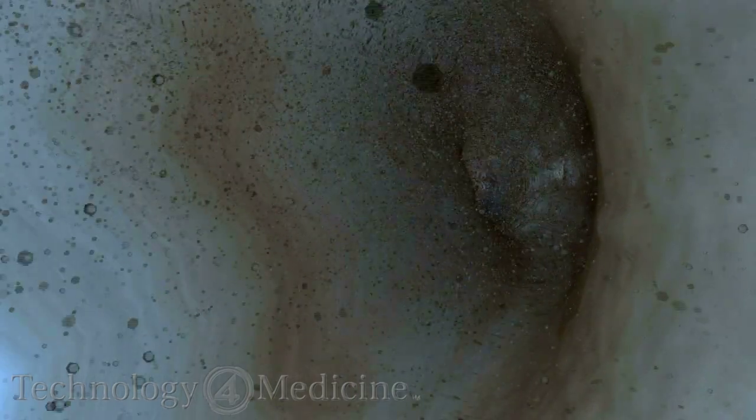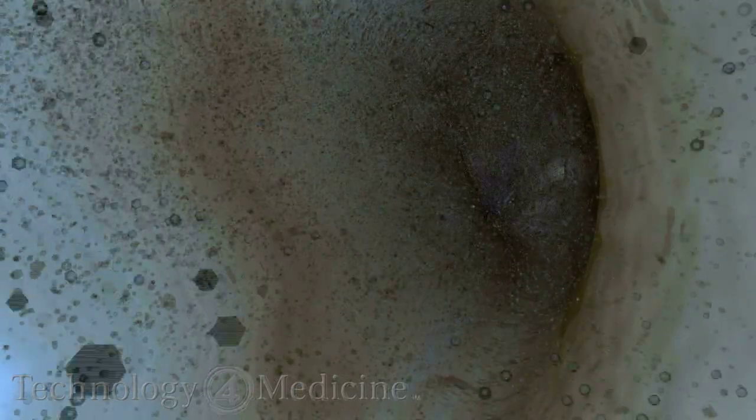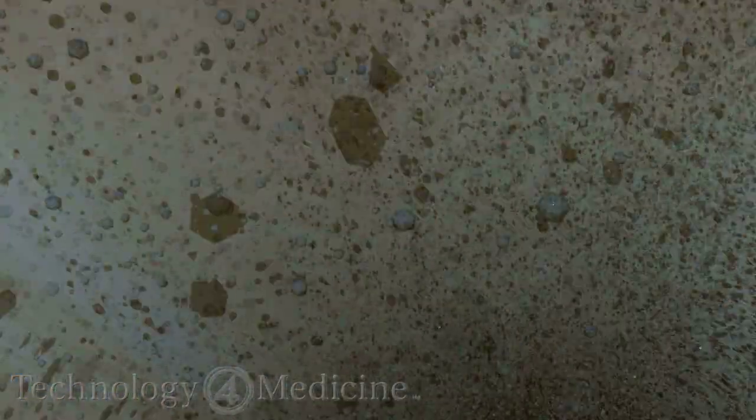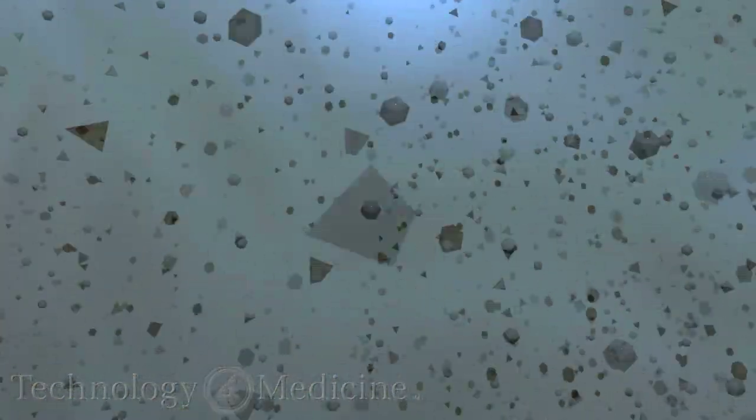flushing of smear layer and debris can be seen exiting upward from the canal into the access opening in the coronal aspect of the tooth. This action has been demonstrated in both experimental test models and clinical trials during the irrigation portion of treatment.